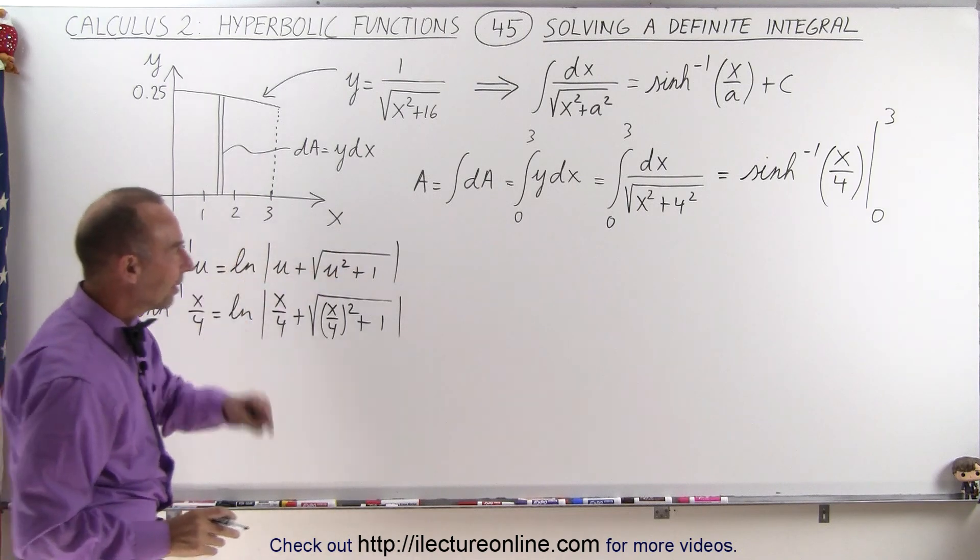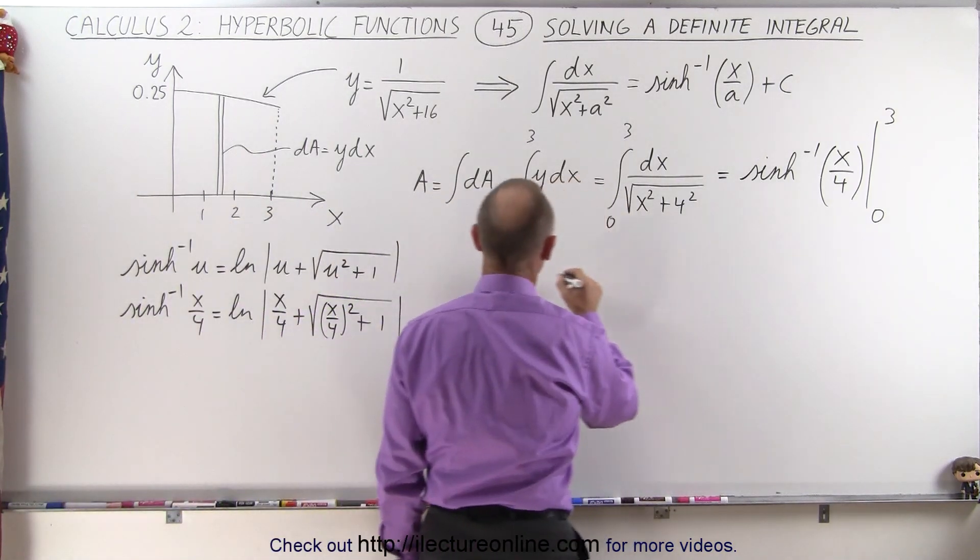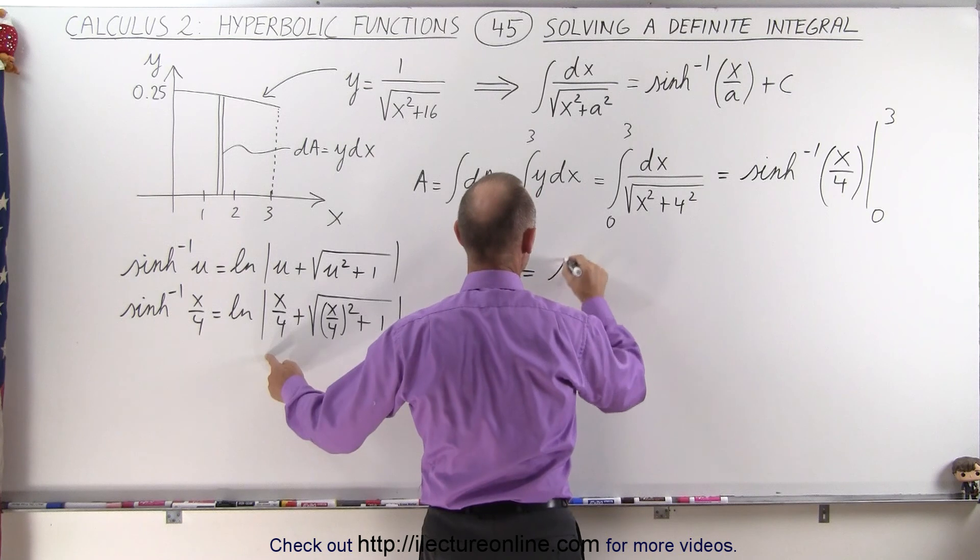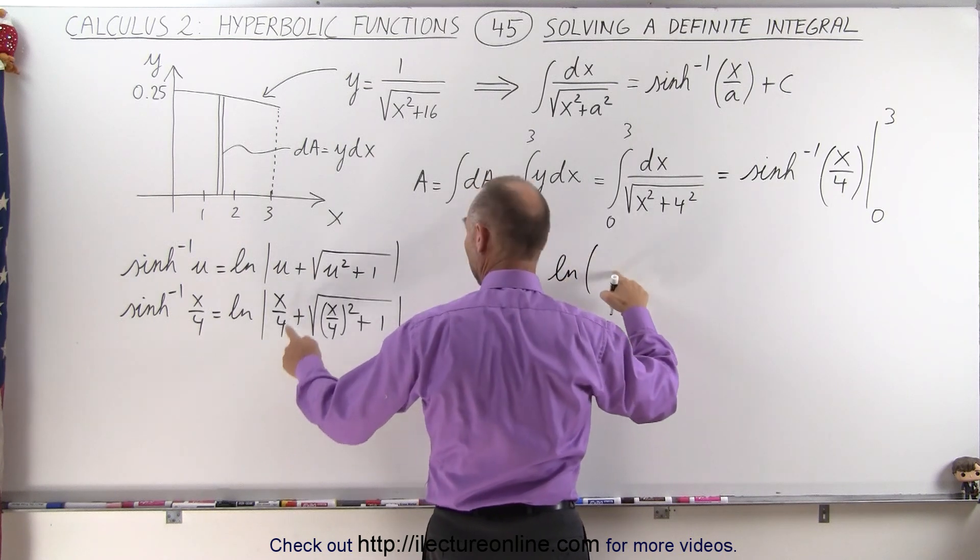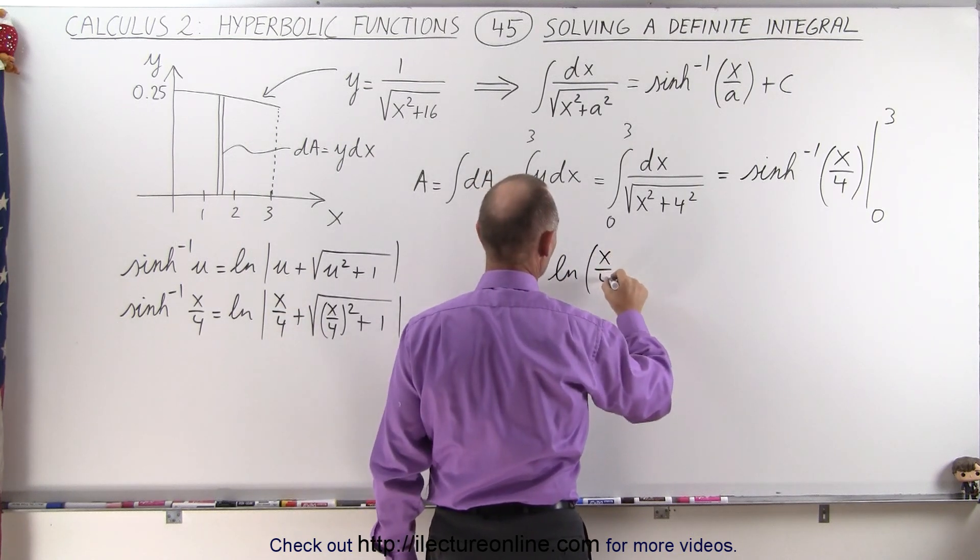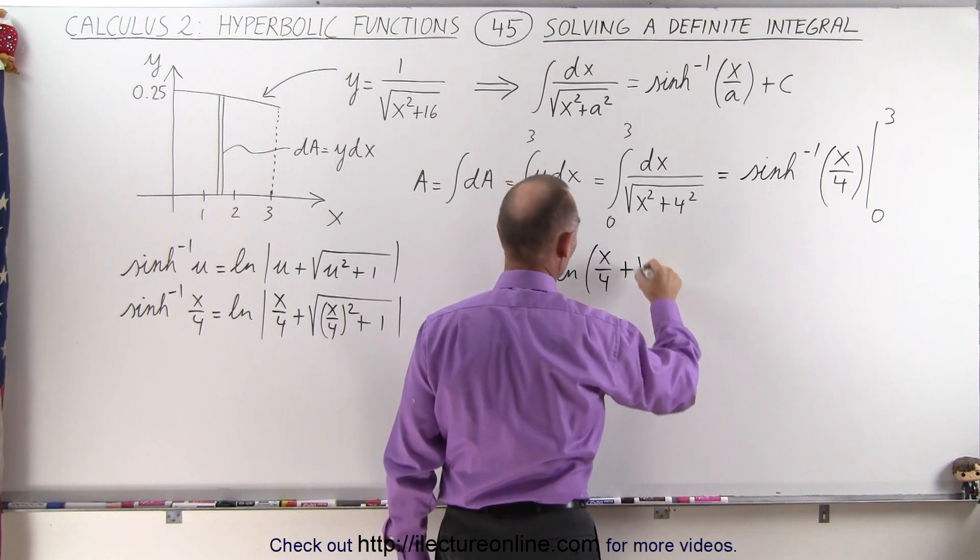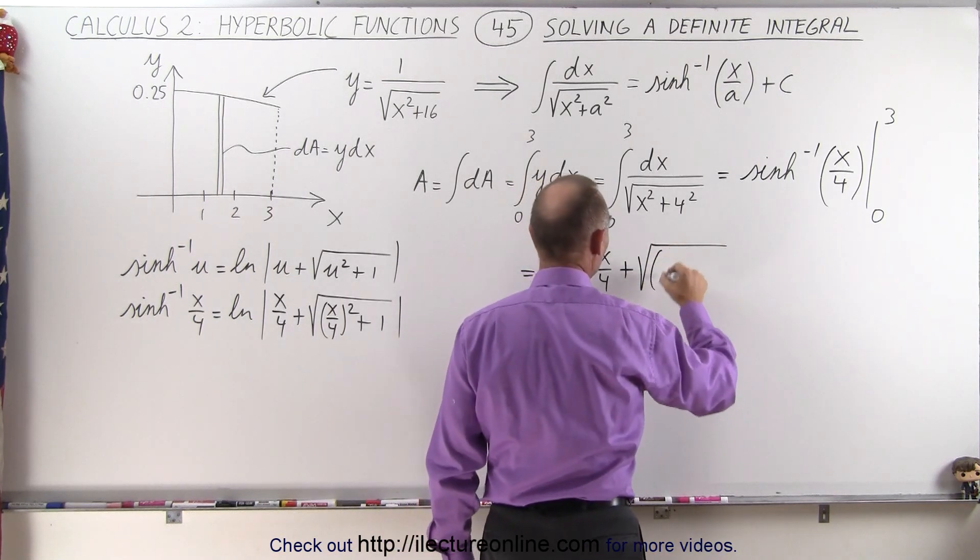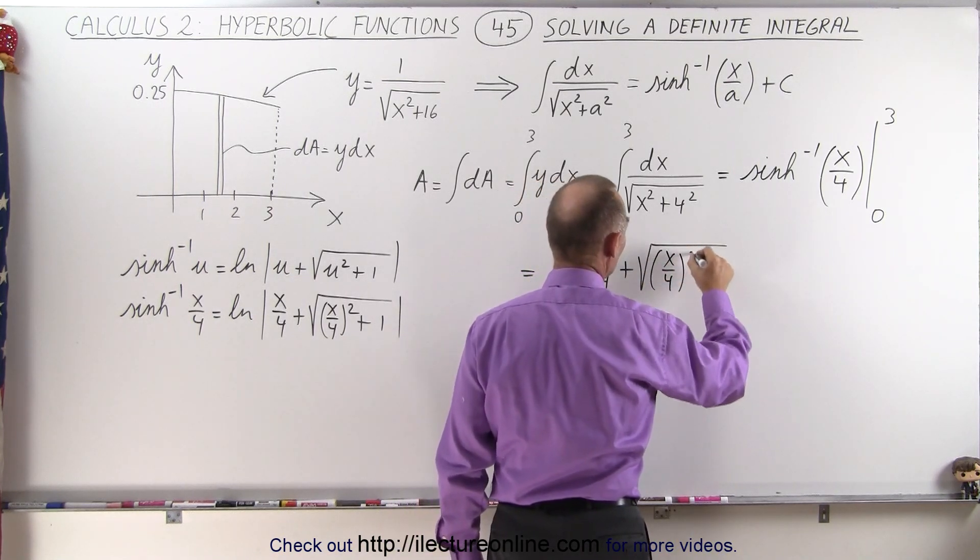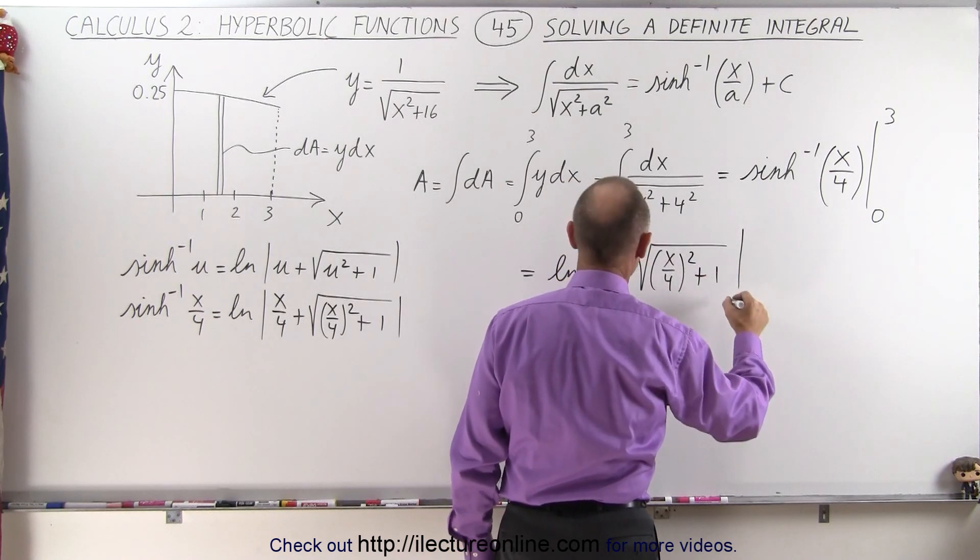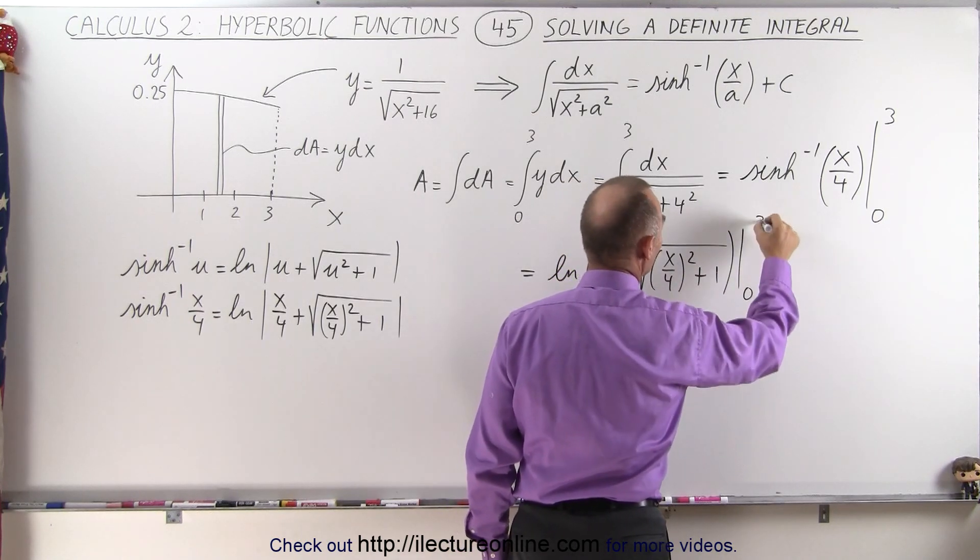And so that means that this can now be written as follows. So this is equal to the natural log of x over 4 plus the square root of x over 4 quantity squared plus 1 evaluated from 0 to 3.